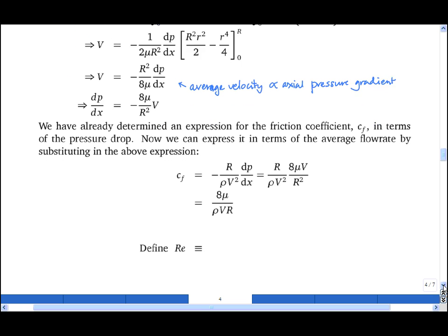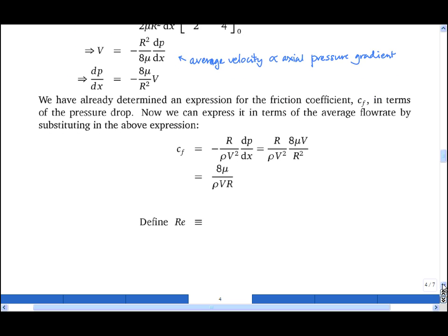Now we can obtain an expression for the friction coefficient in terms of the average flow rate. We take the expression we derived earlier and substitute in for dp by dx from the expression above. And this gives quite a neat expression for cf, the friction coefficient.